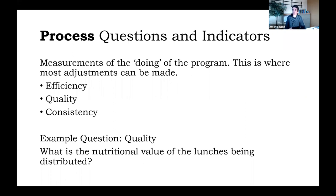When we look at process, we're measuring the doing of the program. And this is where most of our adjustments are going to be made if we do have to adjust our program. Process indicators could include things like efficiency, quality, or consistency of services. And all three of these are very different criteria, very different indicators, but are all very important when we look at programs, particularly ones that are funded and implemented by the public sector.